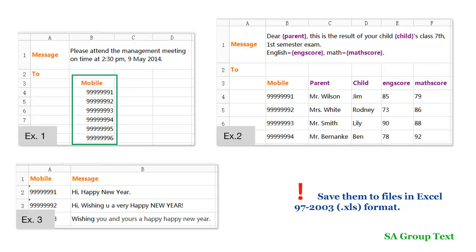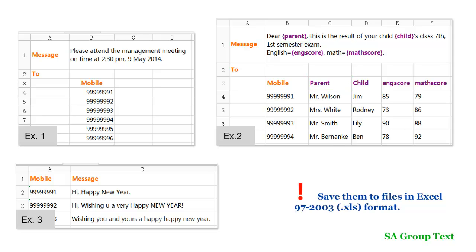Now the second one — this sample is more complicated. The only difference is that we insert tags into the message. Tags are highlighted in purple. Use curly braces to enclose tags. It doesn't matter what you fill between the curly braces, as long as you keep all tags consistent with the column headers. Tags will be replaced by the content defined in the columns when sending. For example, when sent to the first person, the tag 'parent' will be replaced with 'Mr. Wilson' and 'English score' will be replaced with '85'.